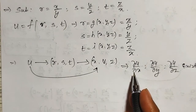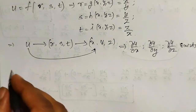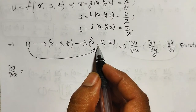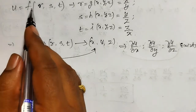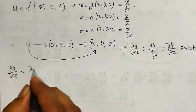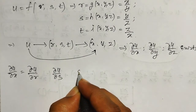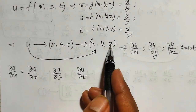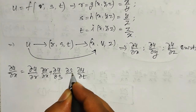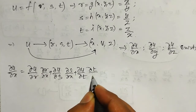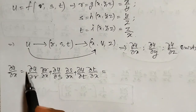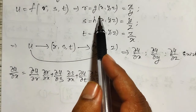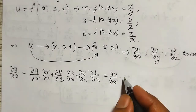And how to define them using a chain rule? I will explain and evaluate here. Let me define dou u by dou x. U is indirectly a function of three variables r, s, t. F is a function of r, s, t, therefore three partial derivatives exist: dou u by dou r, dou u by dou s, and dou u by dou t. But I want U with respect to x, and I know r is again a function of x, y, z. Therefore it is dou u by dou r into dou r by dou x. R is equal to x/y, so the partial derivative of x/y with respect to x will become 1/y.